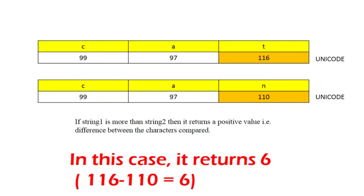Let us understand this with the help of a table. The first string is 'cat' and the second string is 'can'. The Unicode values are: 'c' is 99, 'a' is 97, 't' is 116 for the first string; and 'c' is 99, 'a' is 97, 'n' is 110 for the second string. Comparing these, the first string is greater, so 116 minus 110 equals 6.